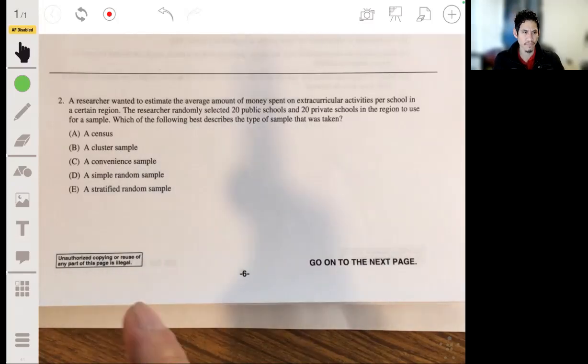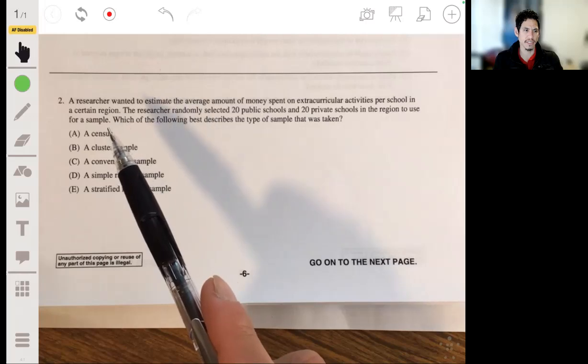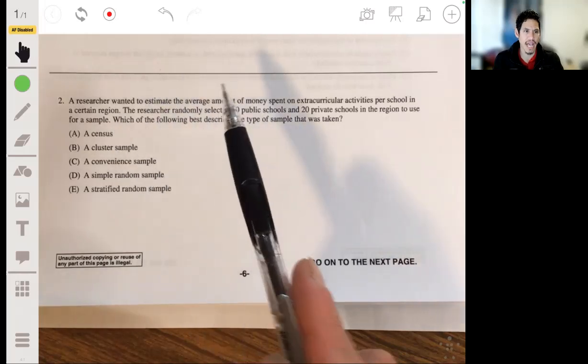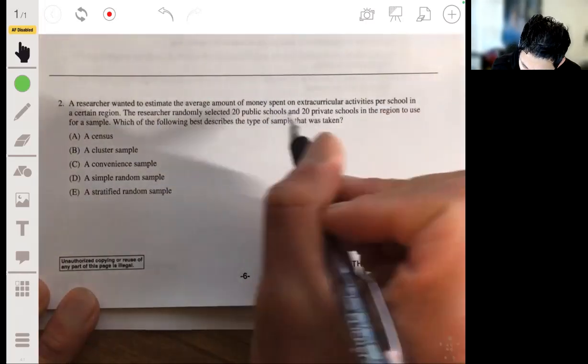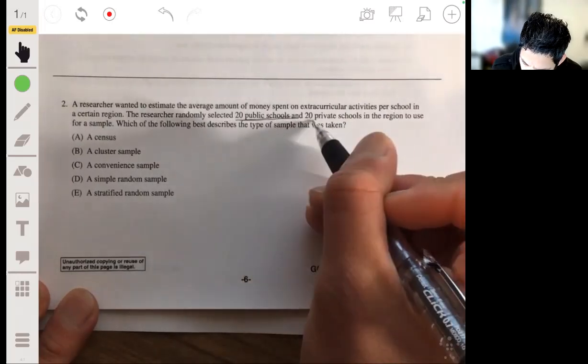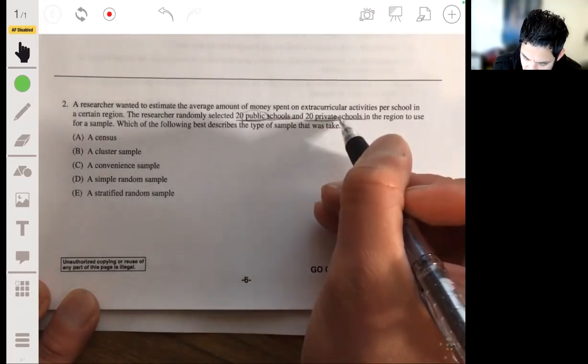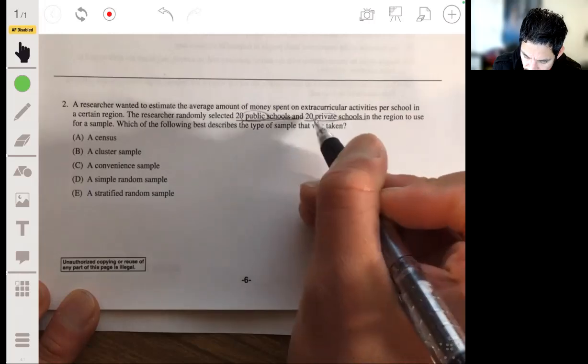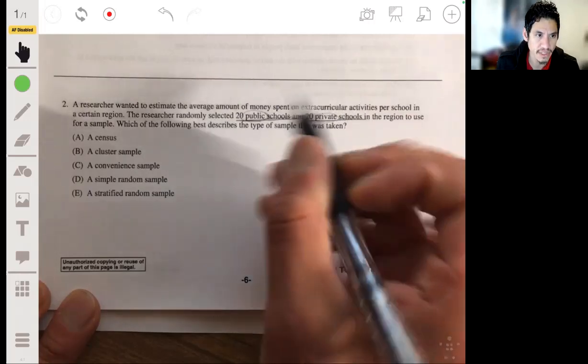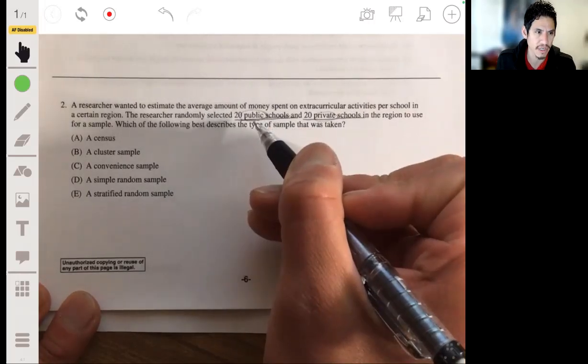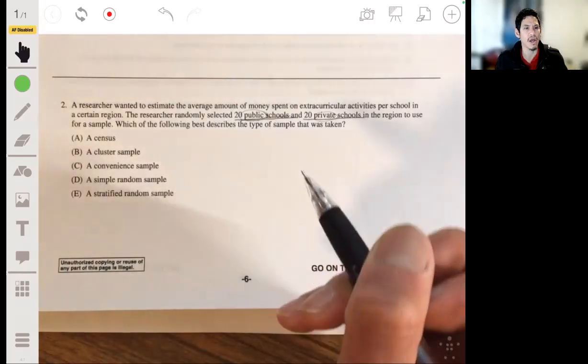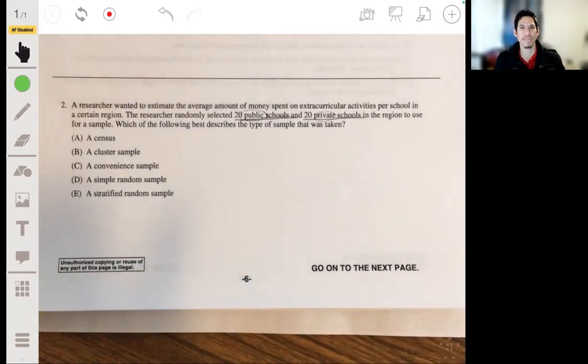Anyways, the key thing that you want to recognize is how they picked or how they distinguished their samples. You see that the key factor here is that the 20 schools here are private and the 20 schools in this group are public. So they basically try to create a... They try to account for the fact that the type of school could be a factor.